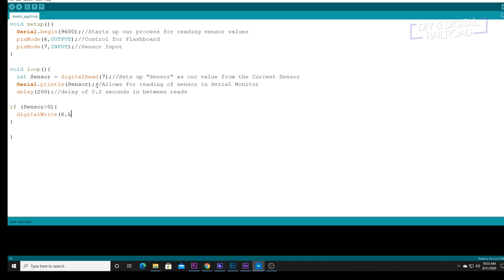So we're going to do a curly bracket and we'll do digitalWrite(6, LOW). And then we need to do else if sensor is less than one. Again, not doing the equal statements. We'll need to do digitalWrite(6, HIGH). And this turns on flash board when something is detected.